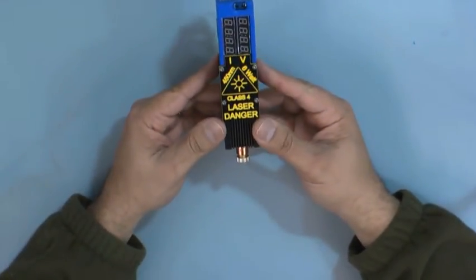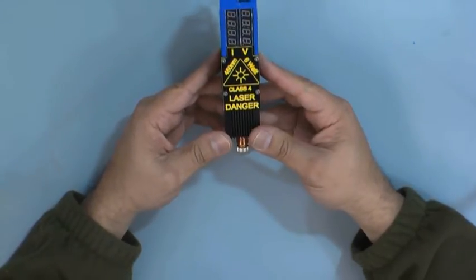This one here, the 450 nanometer, we actually use for engraving serial numbers on some of our parts.